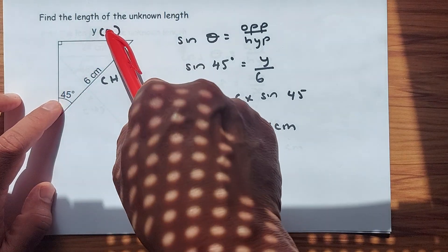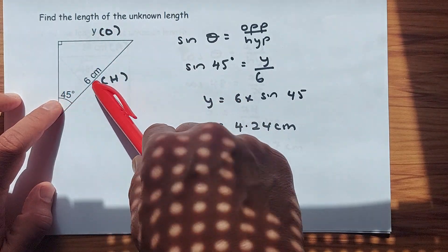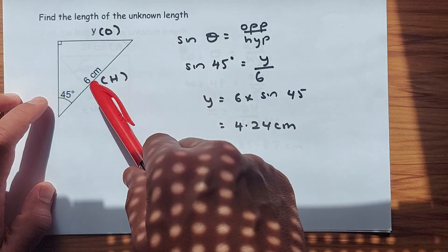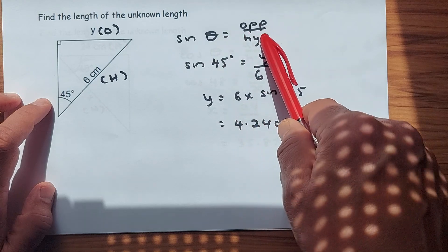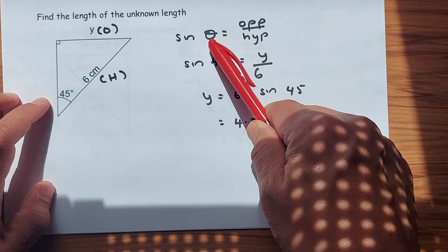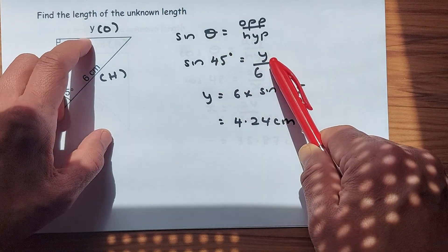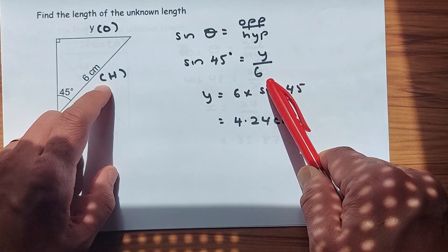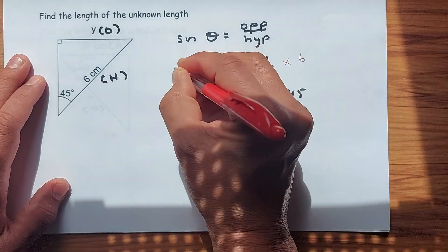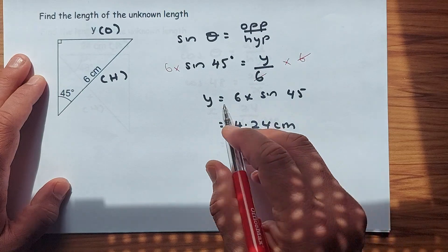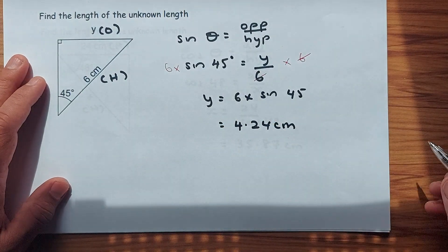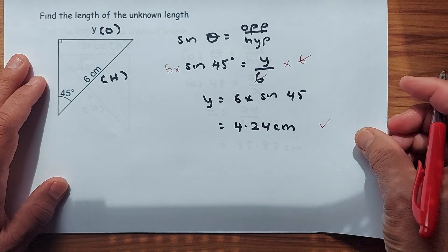The angle is given; the side opposite the angle is called the opposite, and the longer side opposite 90 degrees is the hypotenuse. Since you have opposite and hypotenuse, use sine: sin theta equals opposite over hypotenuse (SOH). Theta is 45 degrees, opposite is Y, and hypotenuse is 6. Multiply both sides by 6, so Y equals 6 times sin 45. The answer is 4.24, earning you another mark.